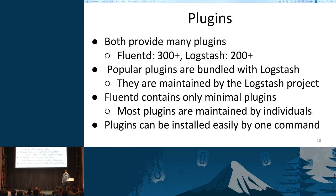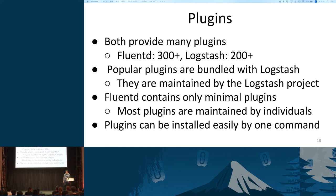Next topic is about plugins. Briefly, they both provide a number of plugins. There are more than 300 plugins for Fluentd and more than 200 plugins for Logstash. Popular plugins are bundled with Logstash, so you will not need additional plugins in many cases, and these bundled plugins are maintained by the Logstash project — that's a great point of Logstash. Fluentd is packaged with only minimal plugins, so you will need to install some plugins, and most Fluentd plugins are developed by individuals, so some may not be well maintained.